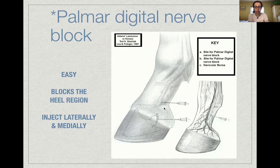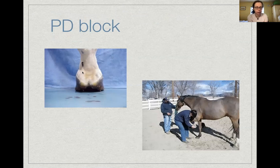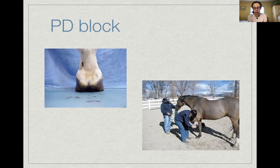When performed bilaterally, this block anesthetizes the caudal two-thirds of the foot — the heel and caudal palmar region. The palmar digital nerve runs down alongside the palmar digital artery and we inject local anesthetic through a small needle over the nerve just proximal to the collateral cartilages. The horse should be restrained by a handler on the same side as the person performing the block, so if the horse moves away the handler won't be squashed, and the handler can monitor what's happening.